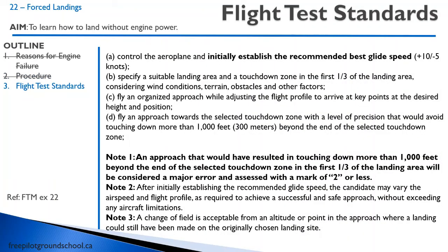Let's talk about the flight test. The forced approach is the number one failed item on a flight test — and the reason is not because people don't make the field or fall short; usually they're too high. So just be aware of that. The plane glides a lot better than you think by the time of your flight test. Don't freak yourself out, don't crowd your field — just hit your base key point at 1,000 feet and you're going to be fine.